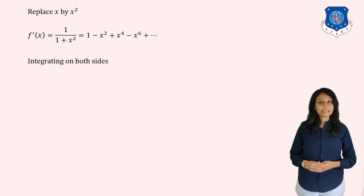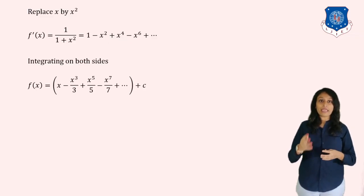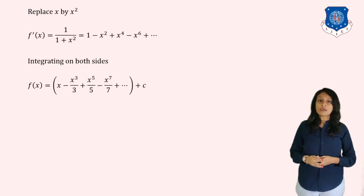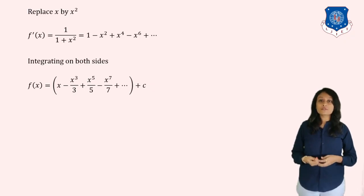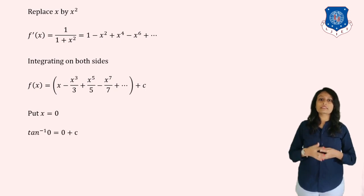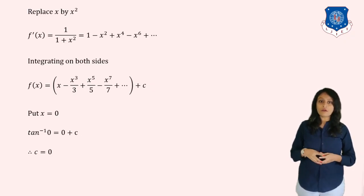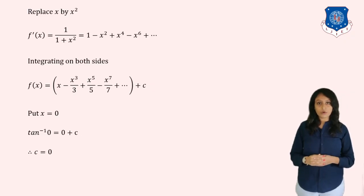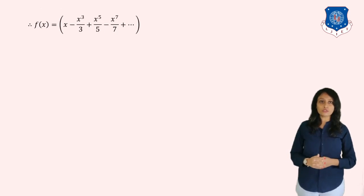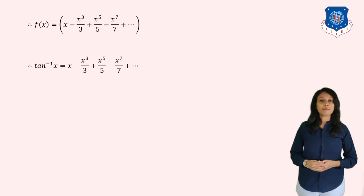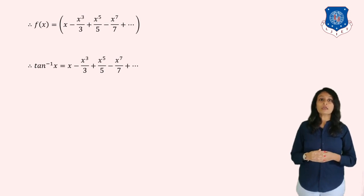To find f(x), integrate f'(x): f(x) = x − x³/3 + x⁵/5 − x⁷/7 + … + c. Setting x = 0: tan⁻¹(0) = 0 = c, so c = 0. Therefore, tan⁻¹x = x − x³/3 + x⁵/5 − x⁷/7 + … This is the Maclaurin series of tan⁻¹x.